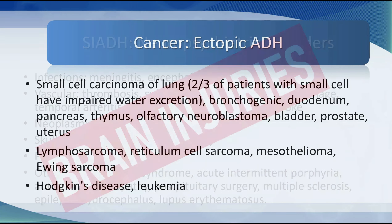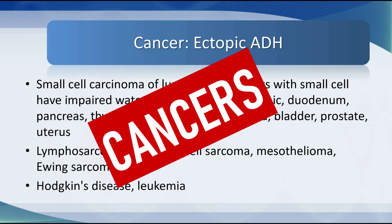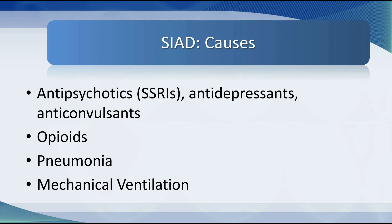The second cause is cancer — so-called ectopic ADH secretion. The most common is small cell carcinoma of the lung; two-thirds of patients with small cell carcinoma have impaired water excretion. Also implicated: bronchogenic carcinoma, duodenal, pancreas, thymus, olfactory neuroblastoma, bladder, prostate, and uterine tumors. Lymphoproliferative diseases — lymphosarcoma, reticulum cell sarcoma, mesothelioma, Ewing sarcoma, Hodgkin's disease, leukemia — a whole array of cancers can cause ectopic ADH.